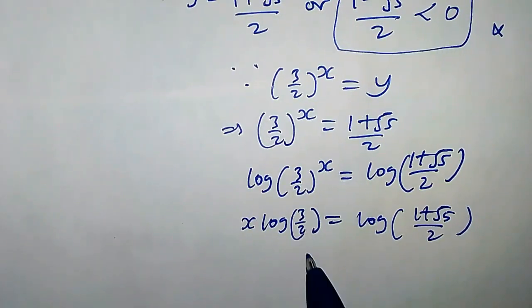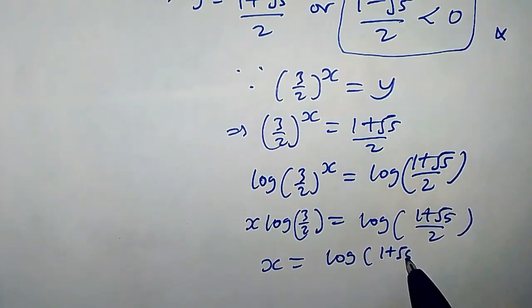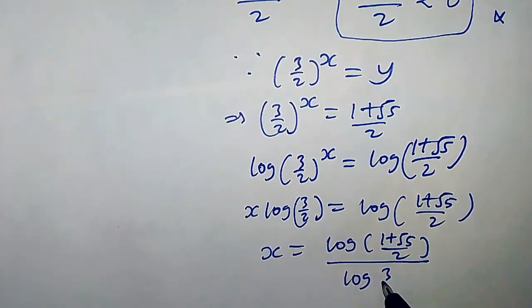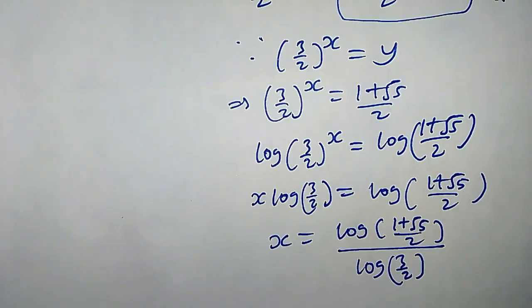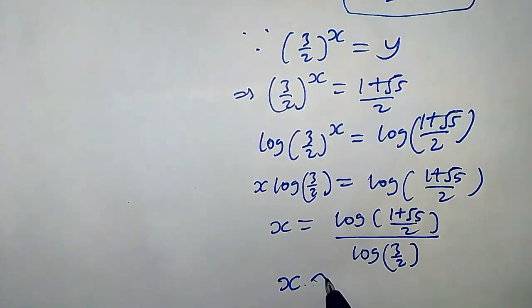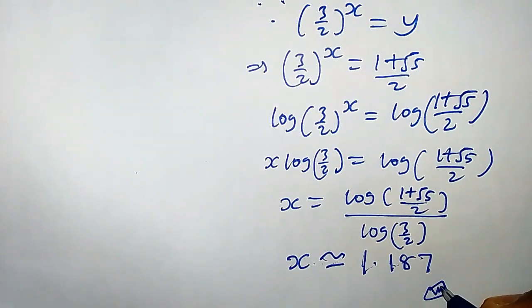Dividing both sides by log(3/2), we get x equals log((1 plus √5)/2) all over log(3/2), which is our final answer. Or you can leave your answer as x approximately equals 1.187, which is the required solution.